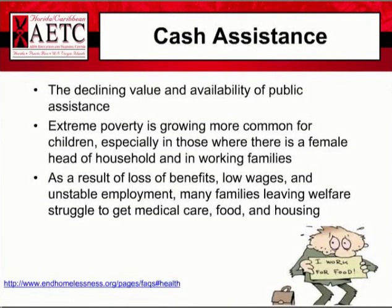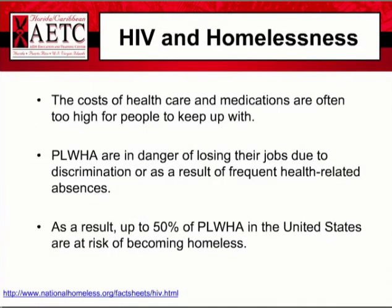The declining value and availability of public assistance is another source of increasing poverty and homelessness. People with disabilities must struggle to obtain and maintain stable housing. The largest cash assistance program for poor families was Aid to Families with Dependent Children (AFDC). The Personal Responsibility and Work Opportunity Reconciliation Act of 1996 repealed AFDC and replaced it with TANF — Temporary Assistance to Needy Families. In 2005, TANF helped a third of the children that AFDC helped. Unfortunately, TANF has not kept up with inflation, and from 2006 to 2008, TANF caseloads continued to decline while food stamp caseloads increased.